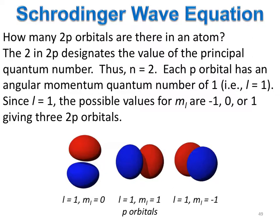How many 2p orbitals are there in an atom? The 2 in 2p simply designates the value of the principal quantum number and has no bearing on how many p orbitals there are, other than stating that the p orbital does exist in the second energy level. Each p orbital, however, has an angular momentum quantum number of one.